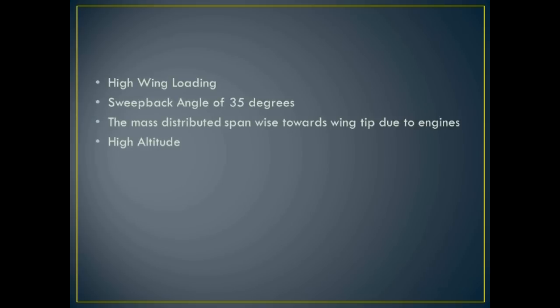The third factor is the mass distributed span-wise towards the wingtip due to engines. For this factor, it depends on the aircraft whether the engine is farther away towards the wingtip or closer to the root of the wing. The fourth factor is higher altitude. So, how does it happen? Let me explain.